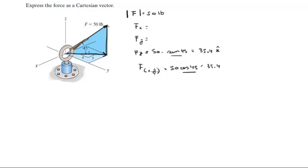Now with this projection, we can find the X component. The X component is given by the projection times 3/5, and it's negative because it's going towards the negative X axis. It comes out to be -21.2.